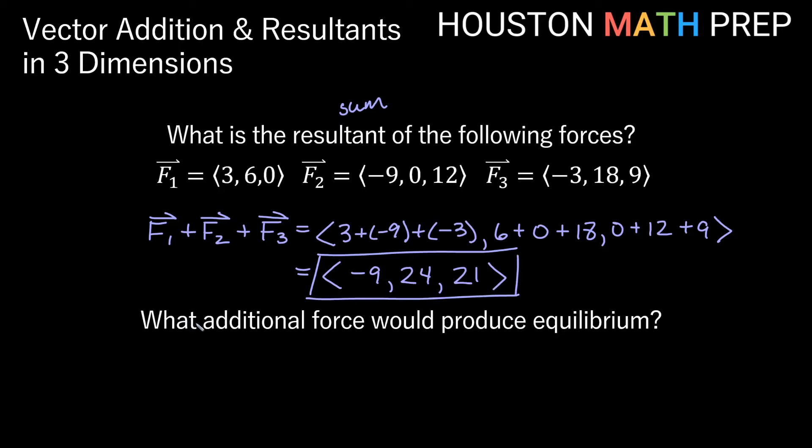An additional question then, what additional force would produce equilibrium? Equilibrium means we want everything to be staying the same. Well, this is definitely a change of 9 units one way, and 24 units one way, and 21 units another way. So if we wanted to make everything have no change at the end, to have equilibrium, then what we really want is we want a resultant of zero.